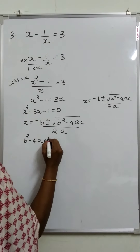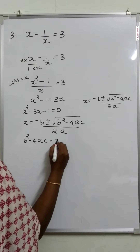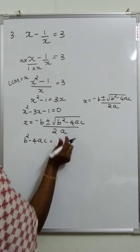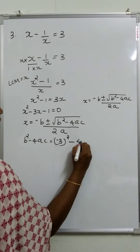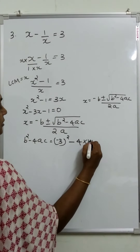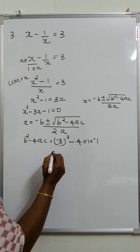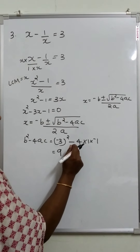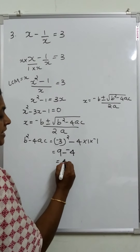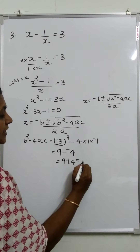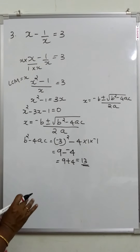That is b squared minus 4ac: minus 3 squared is 9, minus 4 into 1 into minus 1 gives minus 4. So 9 plus 4 is equal to 13. Therefore b squared minus 4ac is equal to 13, which is a positive value, therefore the roots exist.